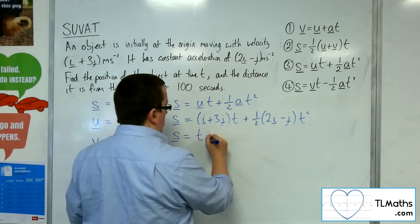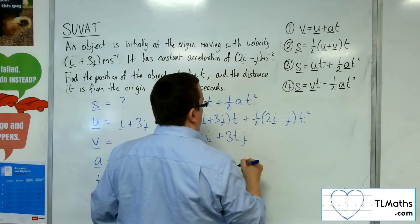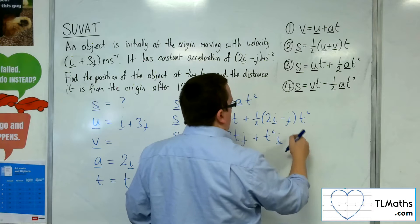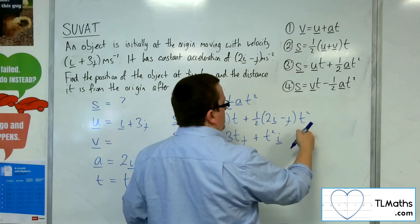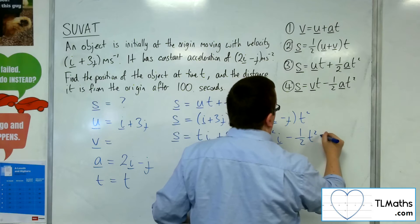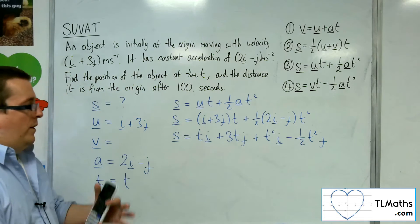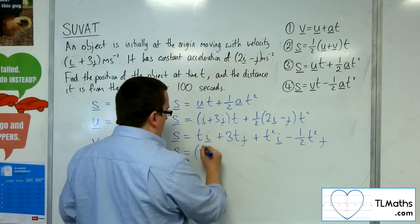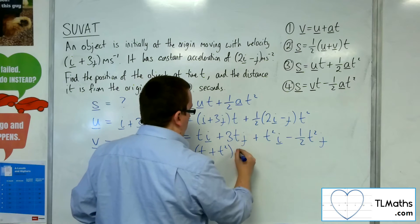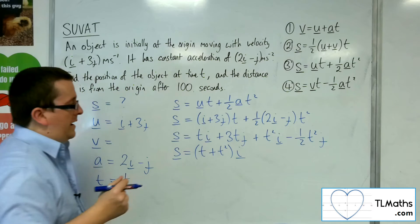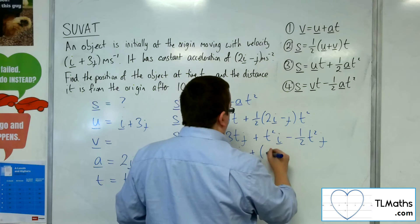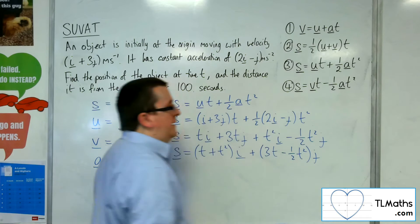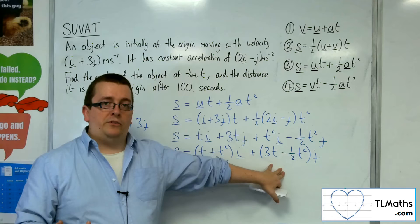I'm going to have ti plus 3tj plus 1 half times 2i times t squared, so just t squared i. And then 1 half times minus j times t squared, so minus 1 half t squared j. So, now I can group things together. I've got the i's, ti and t squared i, so I can write that as t plus t squared i, factoring the i out. And then for the j's, I can have 3t take away a half t squared j. It's now in a preferred format because now I've got something i plus something j.